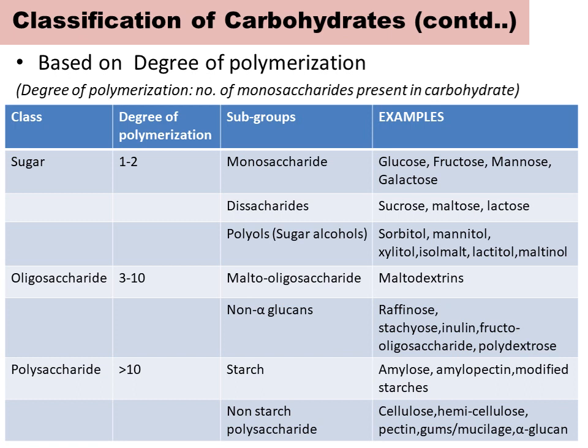The first group is sugar, which includes monosaccharide, disaccharide, and polyols. When two monosaccharides are linked together, we get a disaccharide, and three monosaccharides together give a trisaccharide.